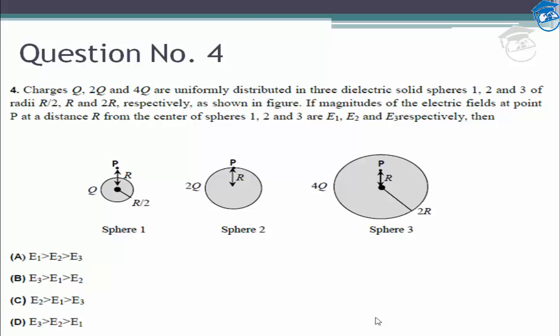We are given three uniformly distributed dielectric solid spheres. Dielectric solid spheres just means they are not conductors - they're insulators, so the charge can be uniformly distributed within them. The radii are R/2, R, and 2R, and we need to find the magnitudes of the electric field at a distance R from the center.